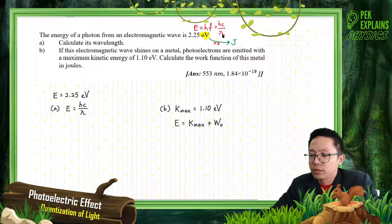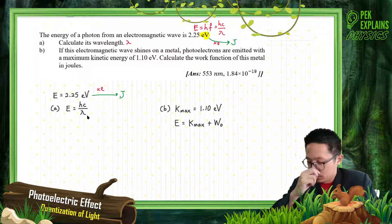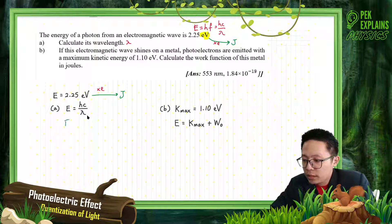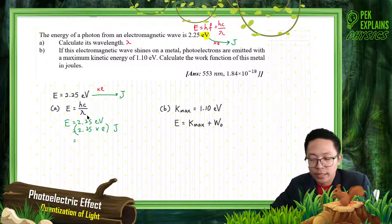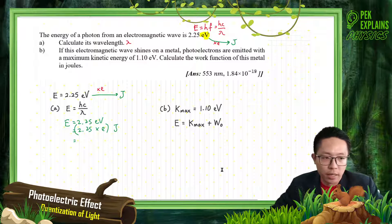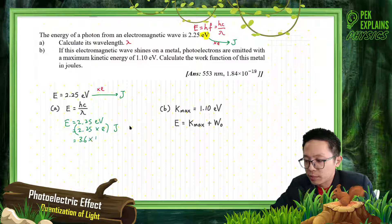To calculate the wavelength, use the formula E = hc over lambda. First, convert to joule: E = 2.25 electron volt = 2.25 times the electron charge. The electron charge is 1.6 × 10⁻¹⁹, so after multiplying, we get 3.6 × 10⁻¹⁹ joule.